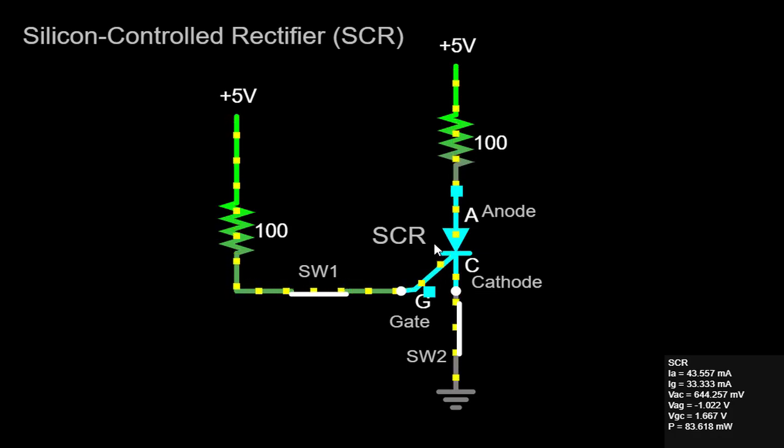The structure of an SCR consists of four alternating layers of P-type and N-type semiconductor materials, forming three junctions. These layers are typically made of silicon, which is why the device is called a silicon-controlled rectifier.